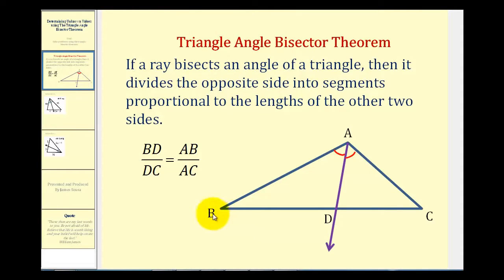...then it divides the opposite sides into segments proportional to the lengths of the other two sides of the triangle, meaning the length of BD to the length of DC will be equal to the ratio of the length of AB to the length of AC.